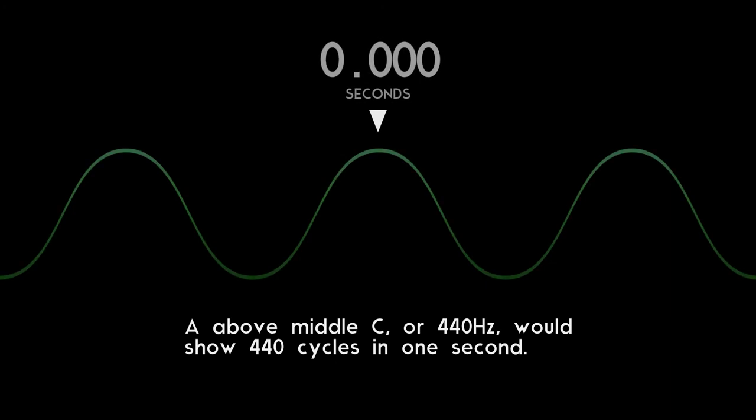A above middle C, or 440 Hz, would show 440 cycles in one second.